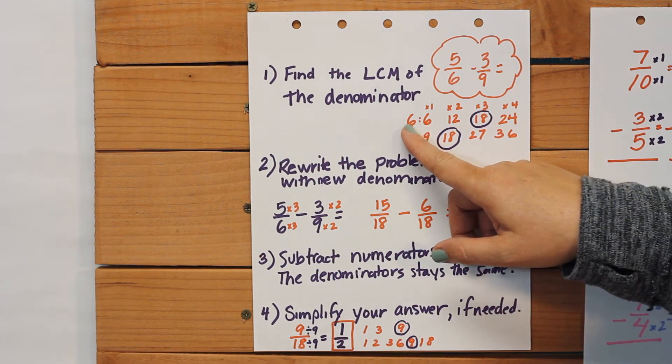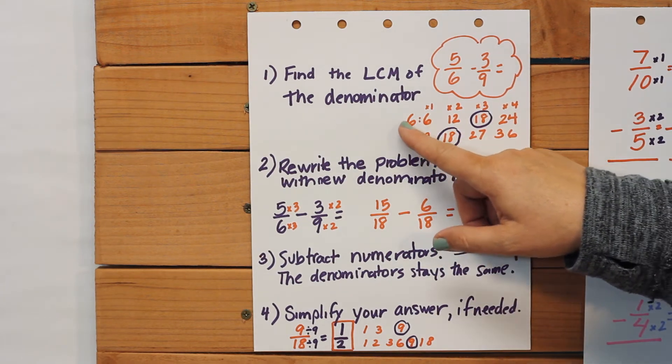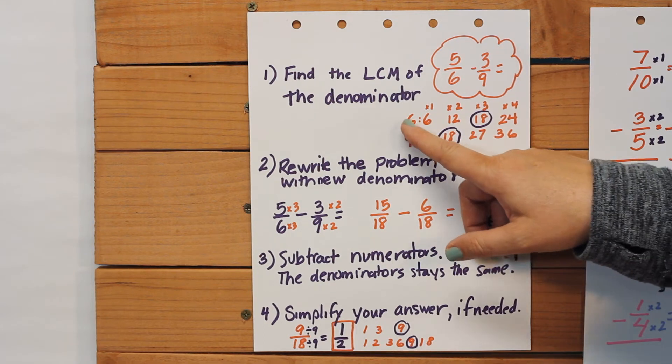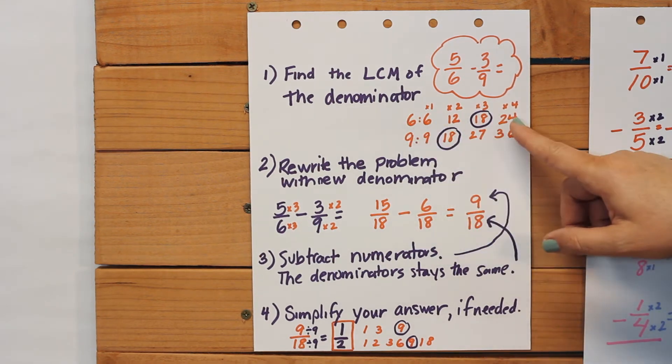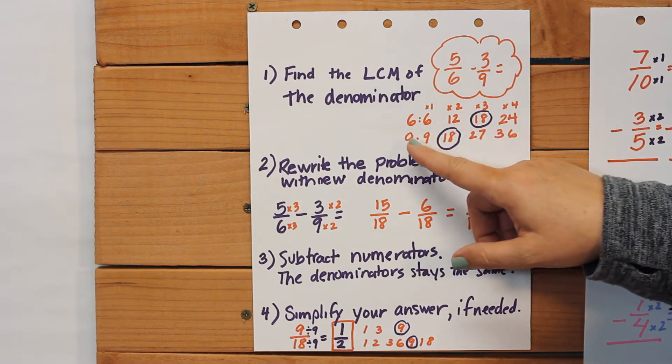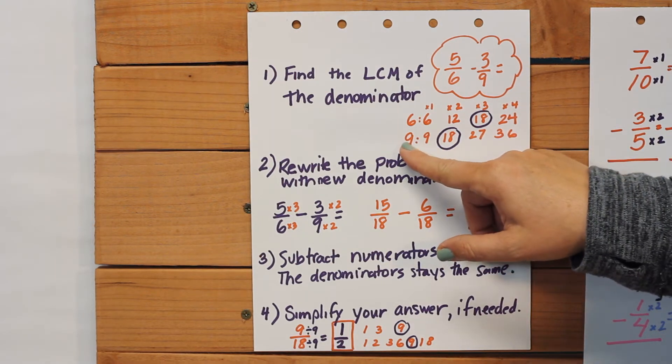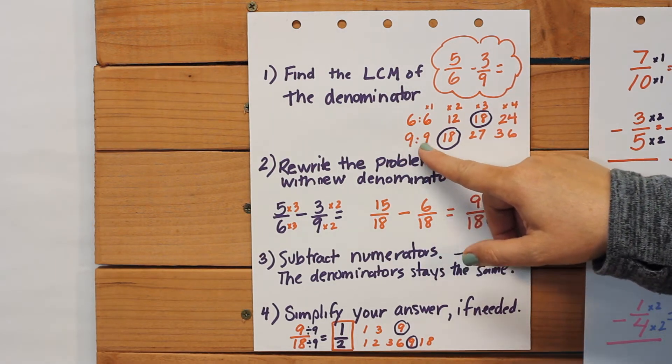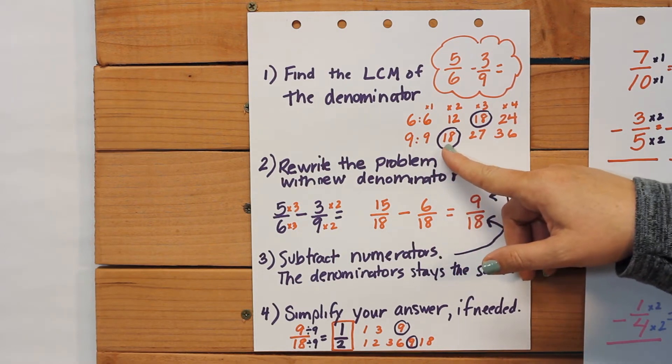So I'm going to look at my sixes first. Six times one is six, six times two is twelve, six times three is eighteen, six times four is twenty-four. So now I'm going to look at the nines and see if I can find a common multiple. Nine times one is nine, nine times two is eighteen.